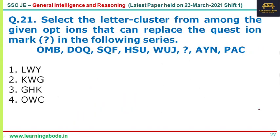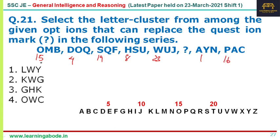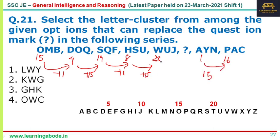Question 21: find the missing letter cluster in the given sequence. Converting to alphabetical positions: O is 15, D is 4, S is 19, H is 8, W is 23, A is 1, P is 16. The pattern is minus 11, plus 15, minus 11, plus 15. So 23 minus 11 is 12, meaning the 12th letter L. Fortunately only one option starts with L — LWY is the answer for question 21.